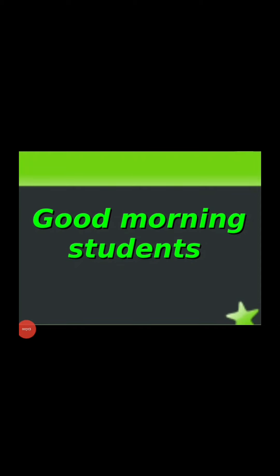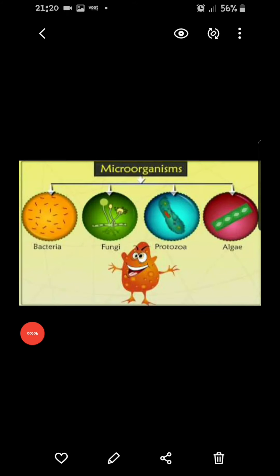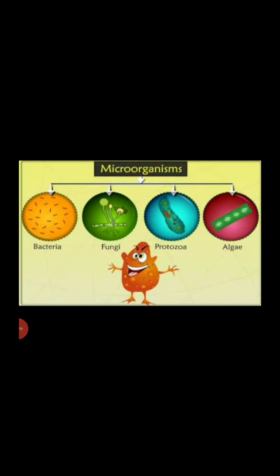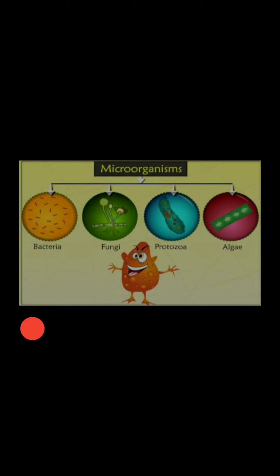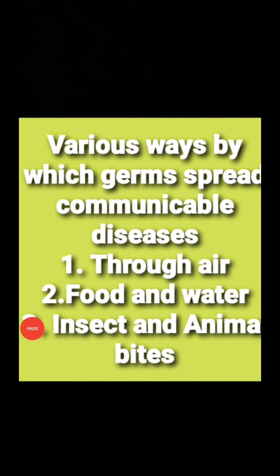Good morning Grade 5, welcome back to EVS class. In the last session we discussed about the various kinds of germs or microorganisms which are responsible for spreading communicable diseases. Today we'll be discussing the mediums through which these germs — namely bacteria, fungi, protozoa, and algae — spread disease. There are various ways by which germs can travel from an infected living being to another: through air, through food and water, and through insect and animal bites.